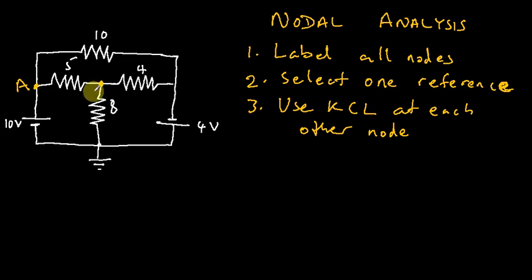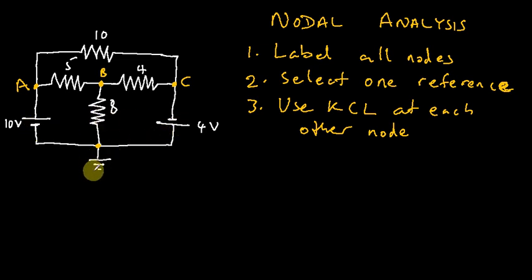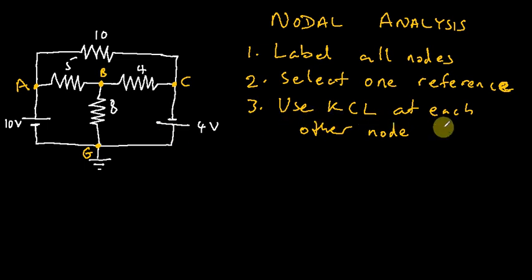Coming to this point, we have three resistors — the 5 ohm, 4 ohm, and 8 ohm — connected together, so I'll call this node B. Then down here we have a 10 ohm resistor, a 4 ohm resistor, and a voltage source connected together, so this is node C. This lower point also has four components: a voltage source, a resistor, another voltage source, and ground. Since we are given a ground terminal, I'll call this node G and select it as our reference.